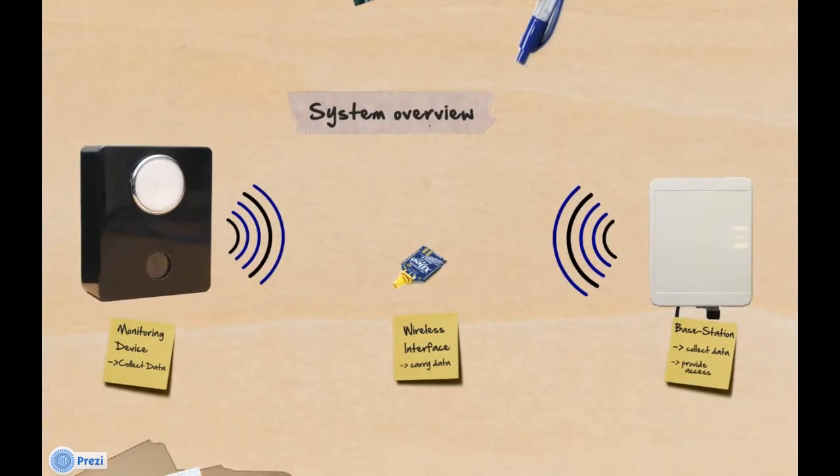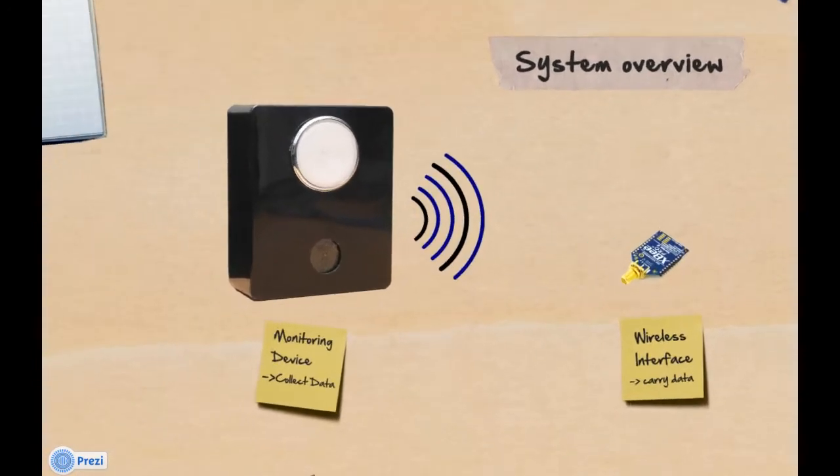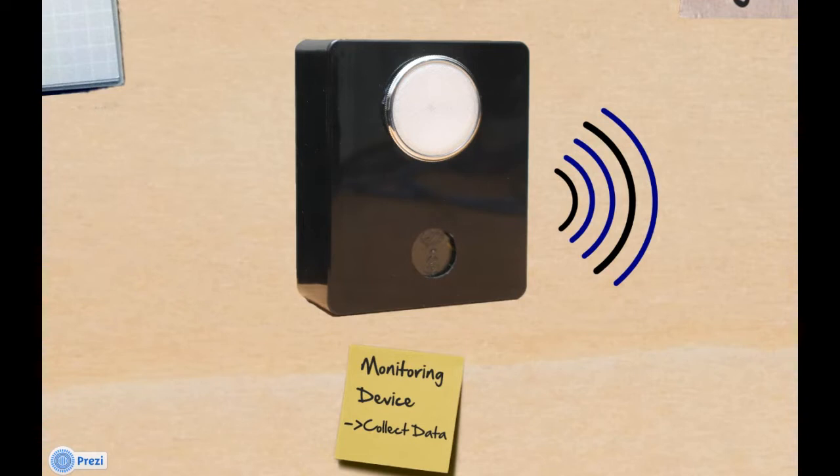The system consists of the battery-powered monitoring device that is attached to a horse and a base station that receives data from monitoring devices, providing access over a web interface. The devices communicate over a ZigBee-based wireless interface.